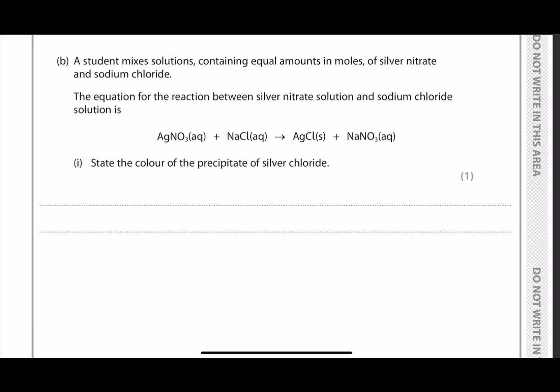Sub-question B, they said that this is the reaction between silver nitrate and sodium chloride. And we have the product is silver chloride. And they asked for the color of the silver chloride precipitate, which is just white.